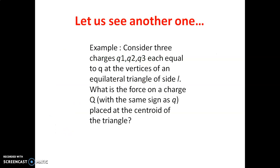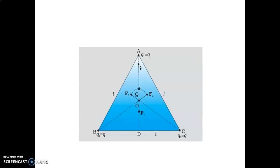Now consider another problem: three charges q1, q2, q3, each equal to q, are at the vertices of an equilateral triangle of side L. What is the force on a charge Q of the same sign placed at the centroid of the triangle? We label the vertices A, B, C. F1 is the force on Q due to q1, F2 due to q2, and F3 due to q3. The directions of these forces are shown in the diagram.